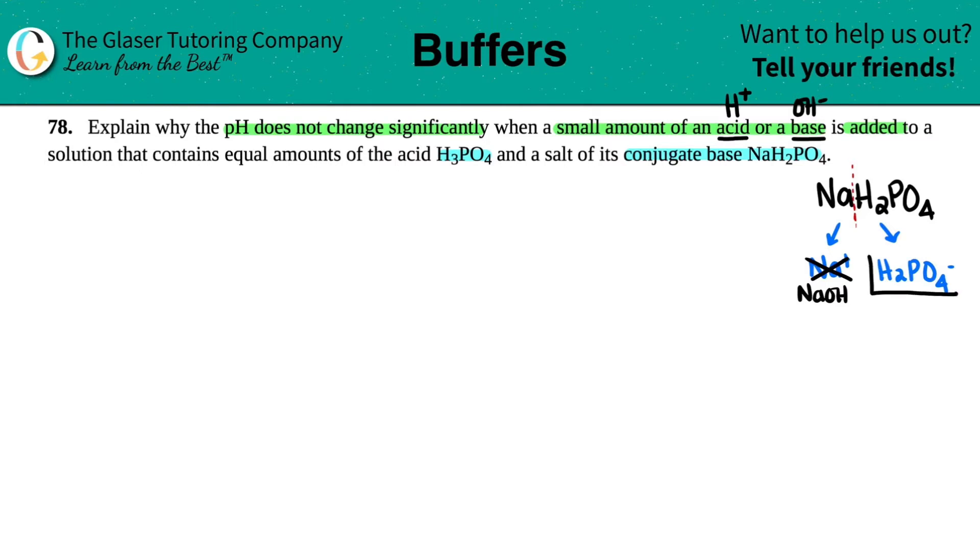We only care about this because the conjugate acid of H2PO4- is the H3PO4, and that's not on our list of six strong acids. So that's why we care only about this portion of NaH2PO4.